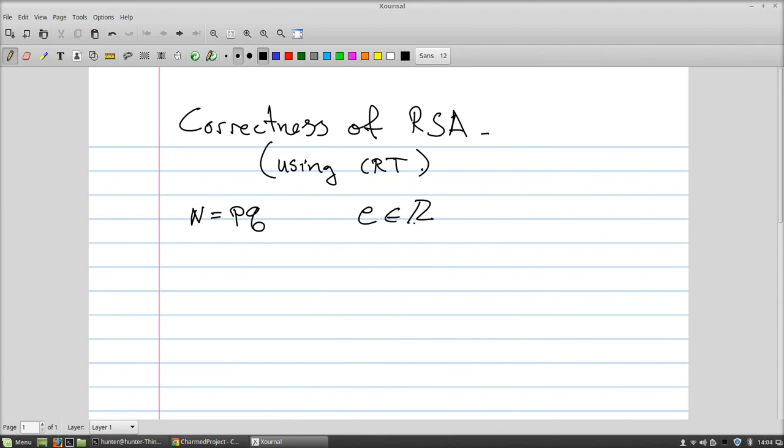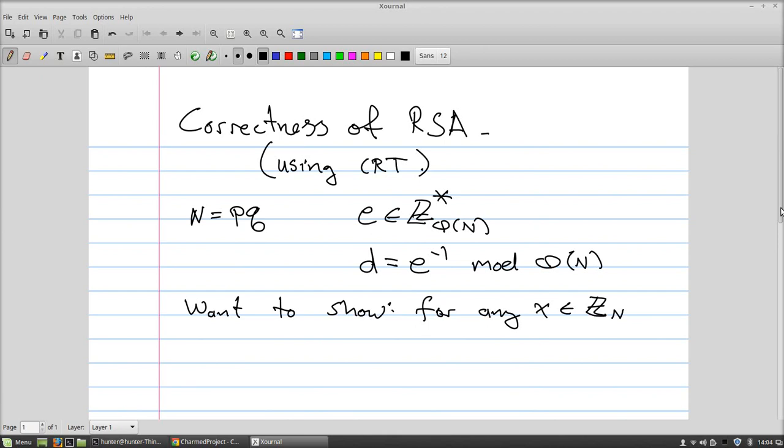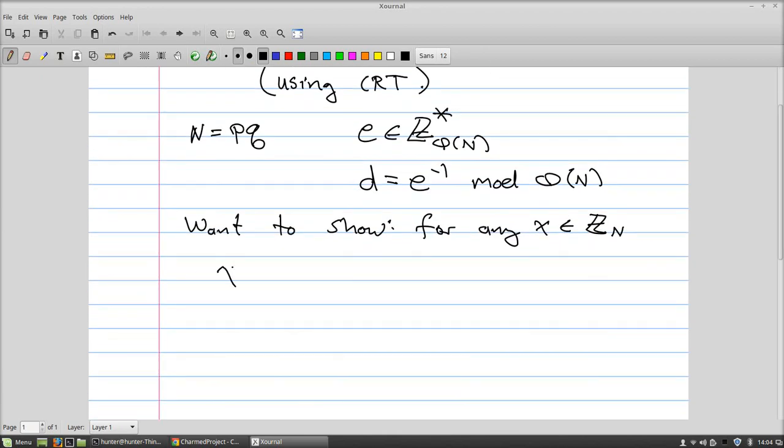e is some element of Z sub φ(N) star, and then d is its inverse. What we want to show is that for any x, which is a potential message, that means it's something in Z_N, it's the case that x to the e to the d is congruent to x mod N.